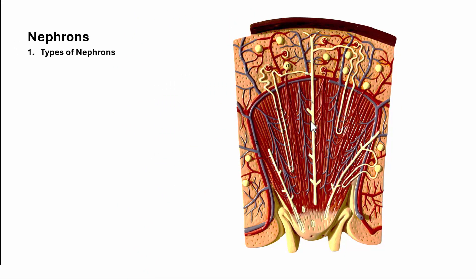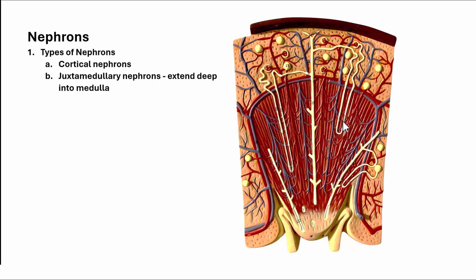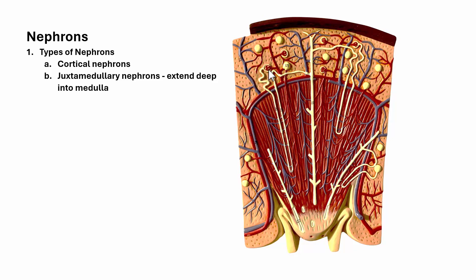The types of nephrons: first, we have cortical nephrons. You can see this one is mostly up in the cortex, though it does dip down into the pyramid — the medulla — a bit. Then we have a nephron that extends deep into the medulla, and we call this a juxtamedullary nephron. Cortical nephrons only dip a little bit into the medulla, while juxtamedullary nephrons dip pretty far into the pyramid or medulla.